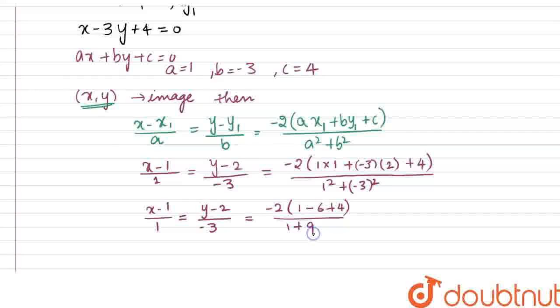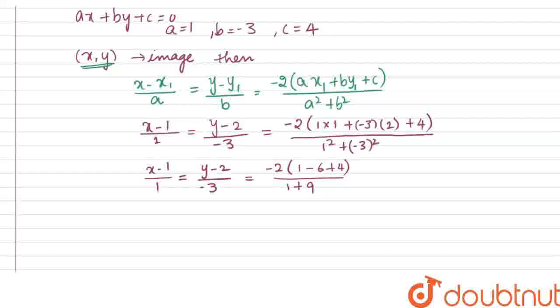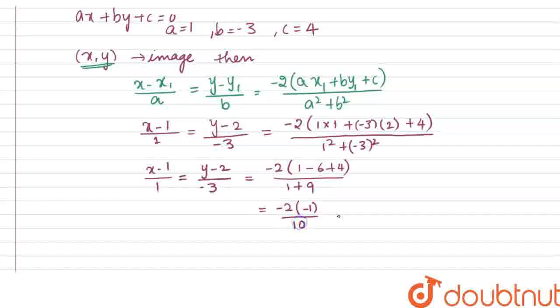That means we get x minus 1 by 1 equal to y minus 2 by minus 3, which is equal to minus 2 into (1 minus 6 plus 4) divided by (1 plus 9). This simplifies to minus 2 into minus 1 divided by 10, which is equal to 2 by 10, which is 1 by 5.